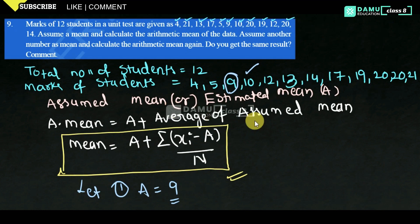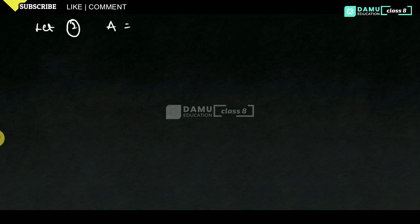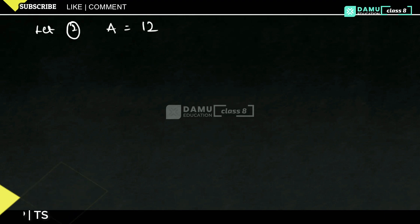Now let's take the second case with assumed mean equal to 12. Any value can be taken as the assumed mean. Let's take 12. So in the second case, assumed mean will be 12. Then we need to find the actual mean using the same formula.